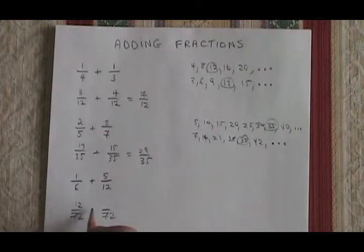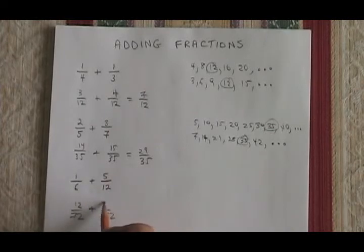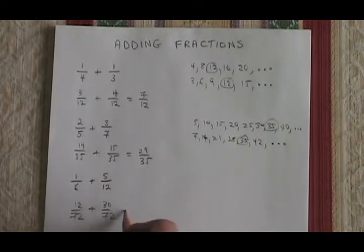So 1 times 12 is 12. I have expanded my first fraction. To turn this 12 into 72, I multiplied it by 6. 5 times 6 is 30. I've expanded my second fraction. 12 plus 30 is equal to 42.